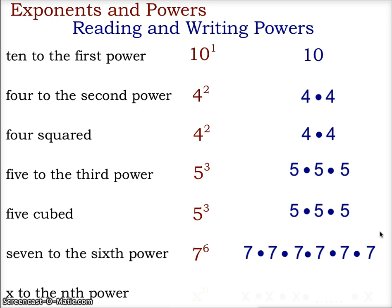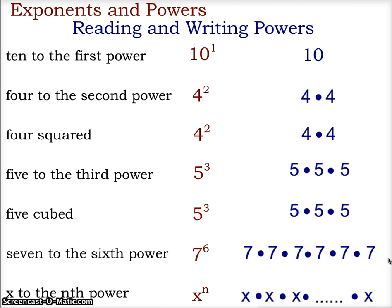Our last example has two variables: x is the base and n is the power, so x to the nth power would be x to the exponent n. In this case, we aren't given a specific value for n, so this would be represented by x times x times x, with dots placed to represent that we continue adding as many x's as necessary to satisfy the value n. This concludes exponents and powers: reading and writing powers — taking verbal expressions and making mathematical expressions from them.